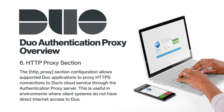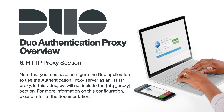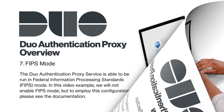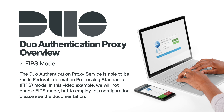The HTTP proxy section configuration allows supported Duo applications to proxy HTTPS connections to Duo's cloud service through the authentication proxy server. This is useful in environments where client systems do not have direct internet access to Duo. In this video example, we will not include the HTTP proxy section. The Duo Authentication Proxy service is also able to run in Federal Information Processing Standard (FIPS) mode; however, in this video example, we will not enable FIPS mode. For more information on either configuration, please refer to the documentation.